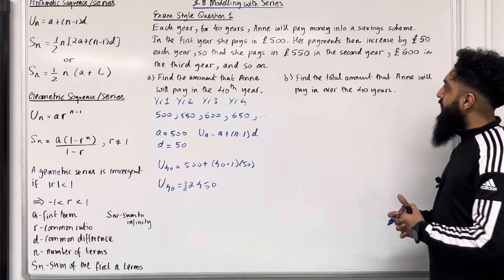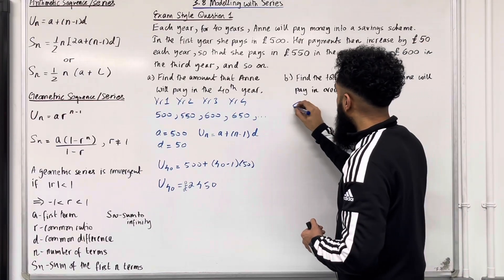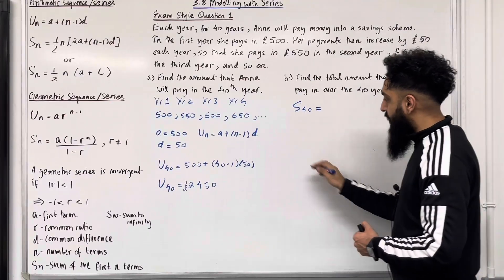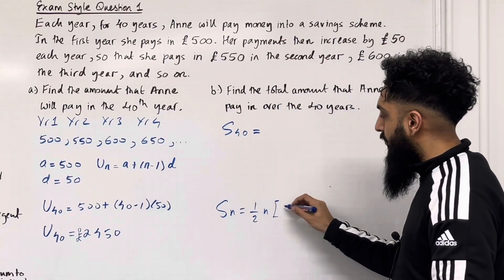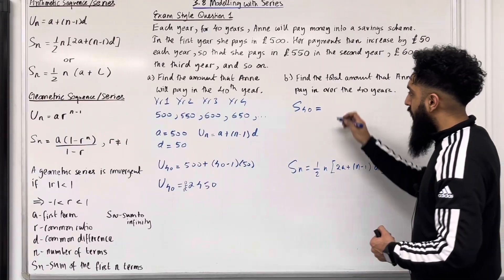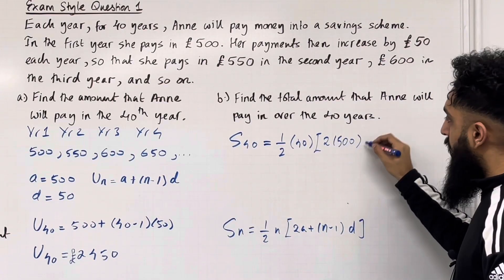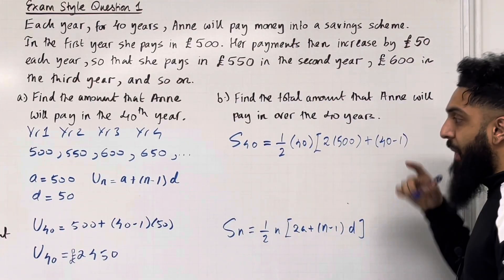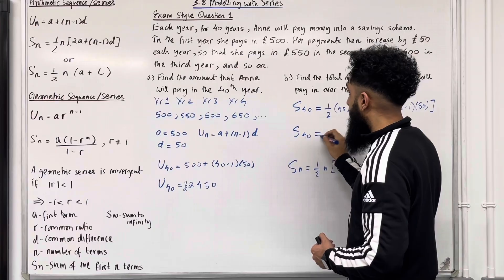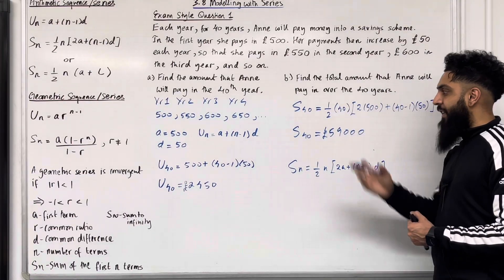Moving on to part B: find the total amount that Anne will pay in over the 40 years. The key word is total, so we're trying to calculate S₄₀, the sum of the first 40 terms. We use the Sₙ formula: Sₙ = ½N[2A + (N − 1)D]. Applying this: S₄₀ = ½ × 40 × [2(500) + (40 − 1) × 50]. Putting this into the calculator gives exactly £59,000. So the total amount Anne will pay over the 40 years is £59,000.